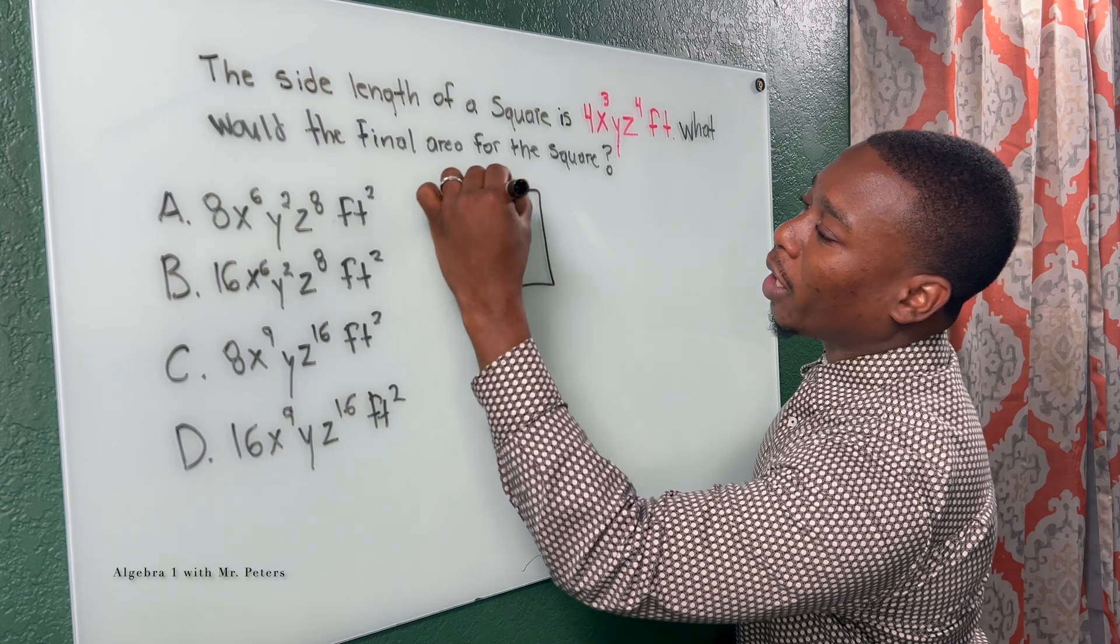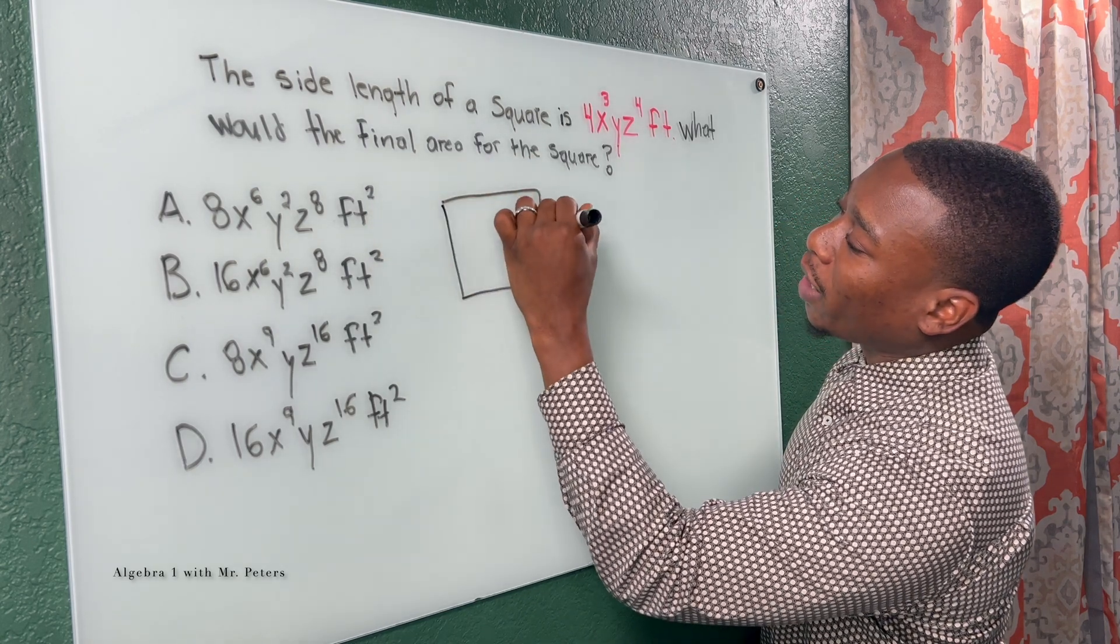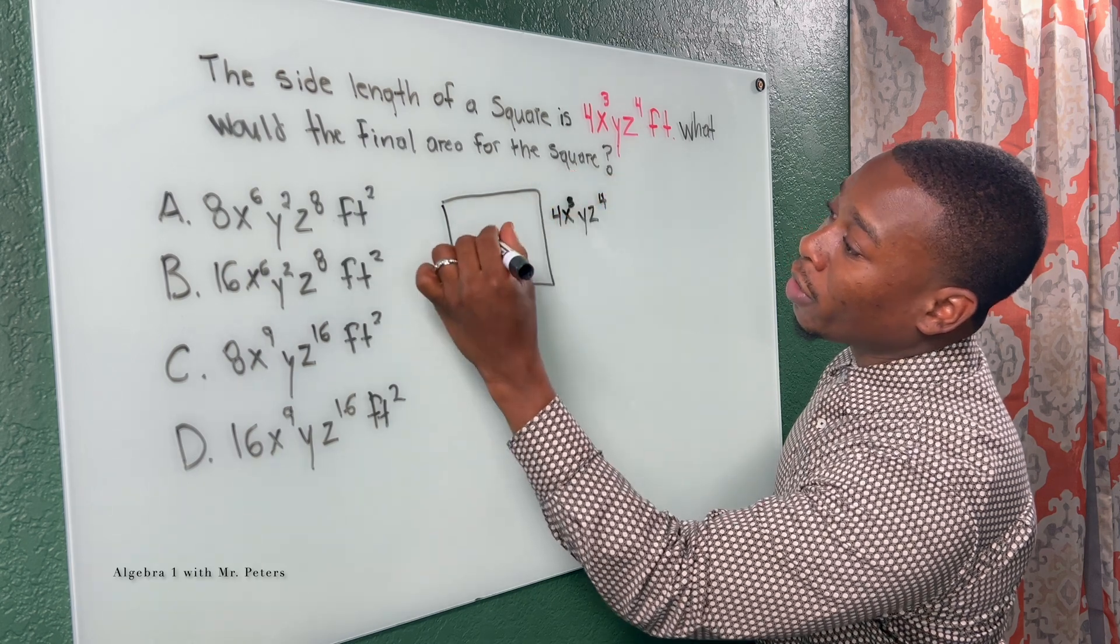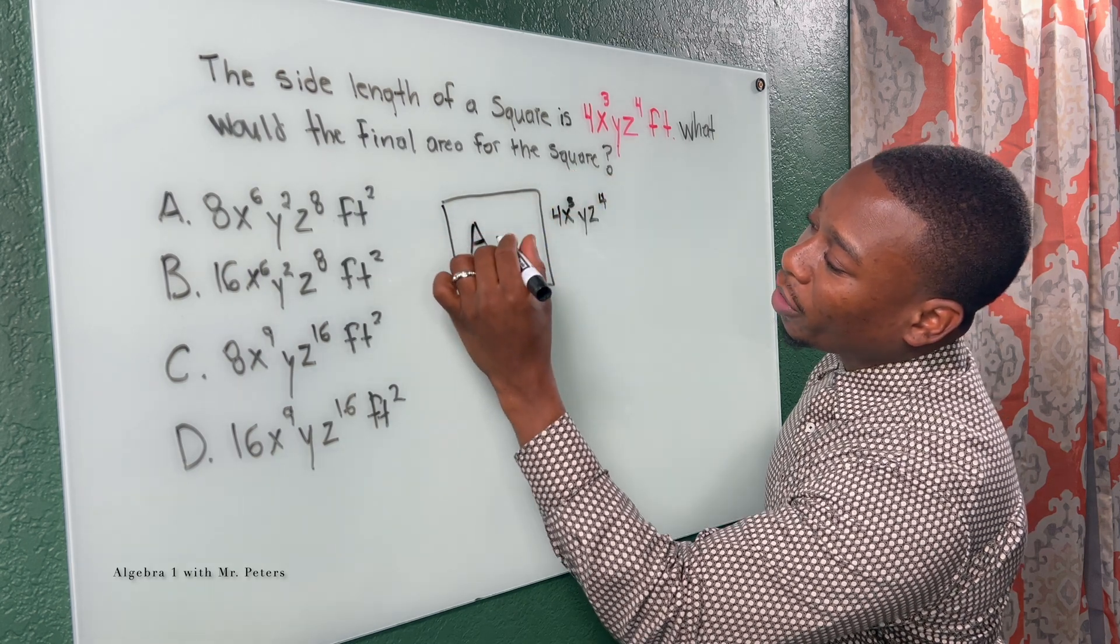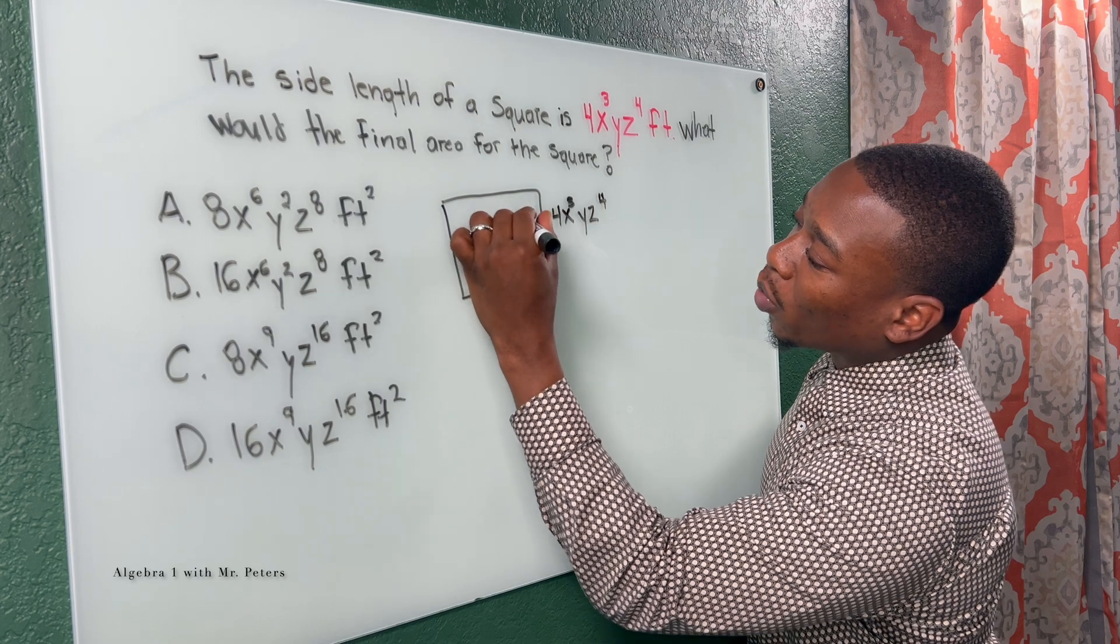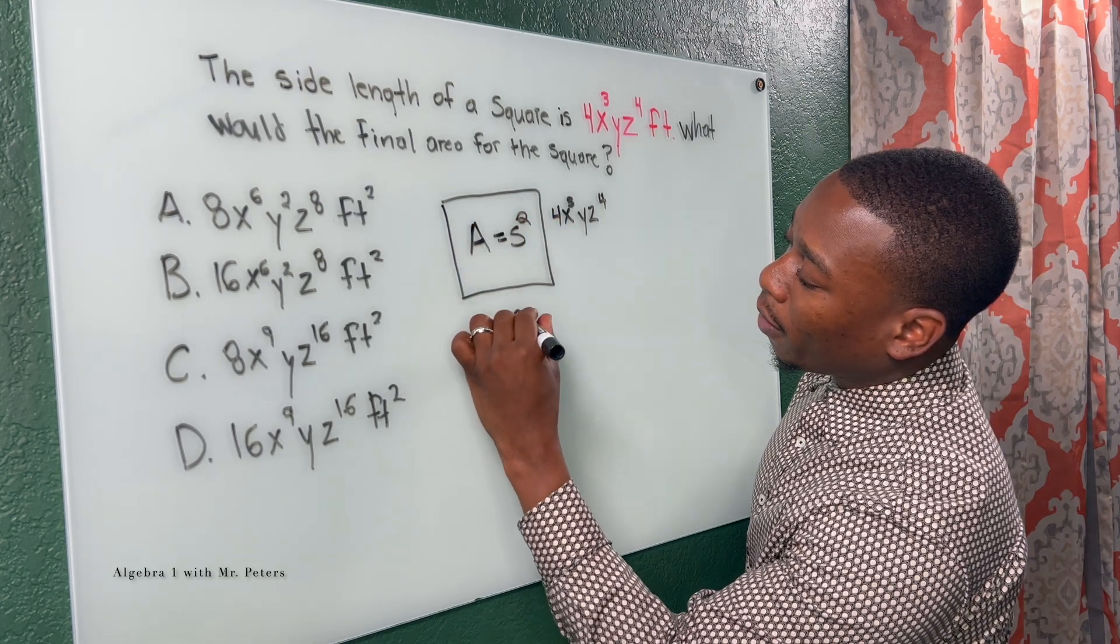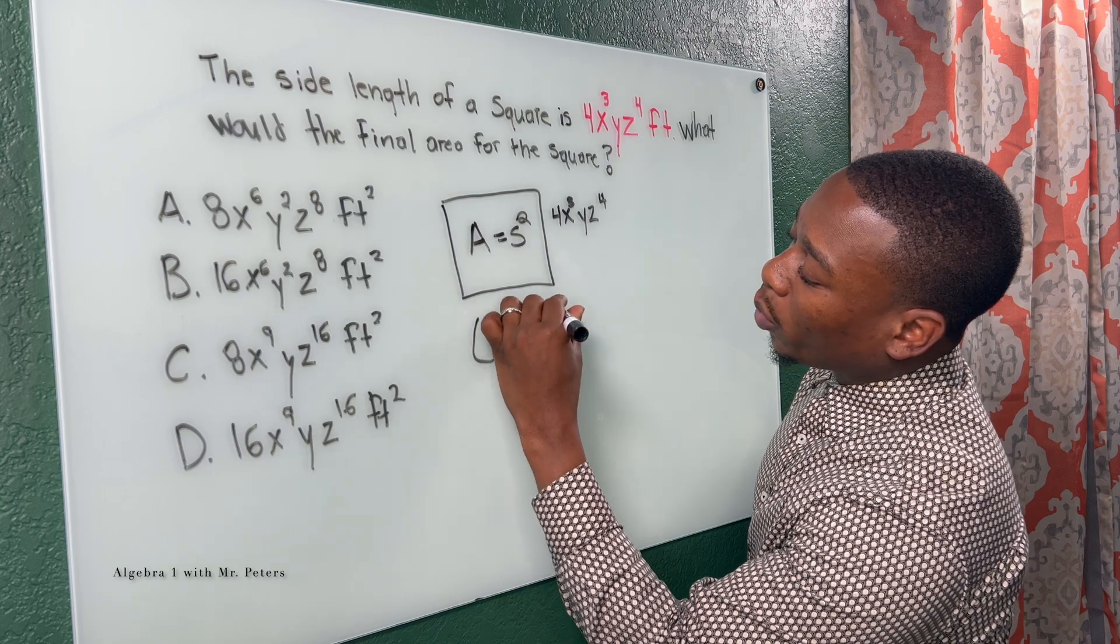So let's just draw a diagram. We know that one side of the square is 4X to the third, YZ to the fourth. Now, just remember that area of a square is equal to S squared. So if we take this side and we square it, we can get our answer.